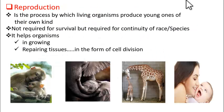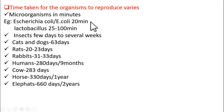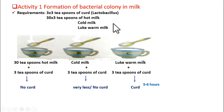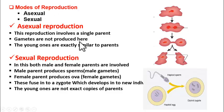So far we have understood what reproduction is, how different organisms reproduce in different ways — as seen with paramecium — and how the time taken for reproduction varies across organisms and with environmental conditions. Next, we will look at the types of reproduction. Basically, reproduction can be classified into two types: asexual reproduction and sexual reproduction, which we will cover in detail in upcoming videos. Thank you.